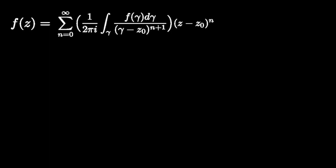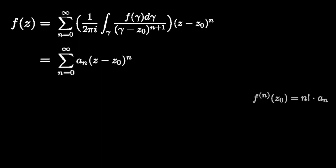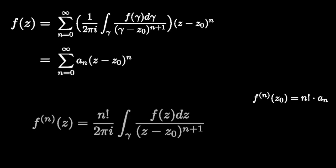Combining what we have said so far, we have found an expression for a_n. Since the nth derivative of f equals n factorial times a_n, we can multiply this expression by n factorial to arrive at an explicit formula for the nth derivative of f in terms of an integral of f around a closed curve.